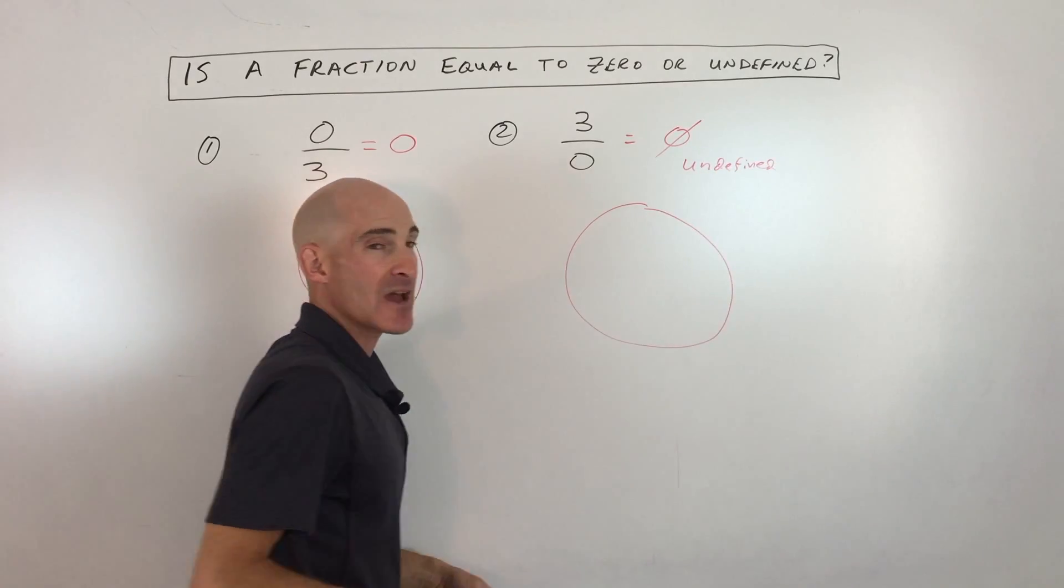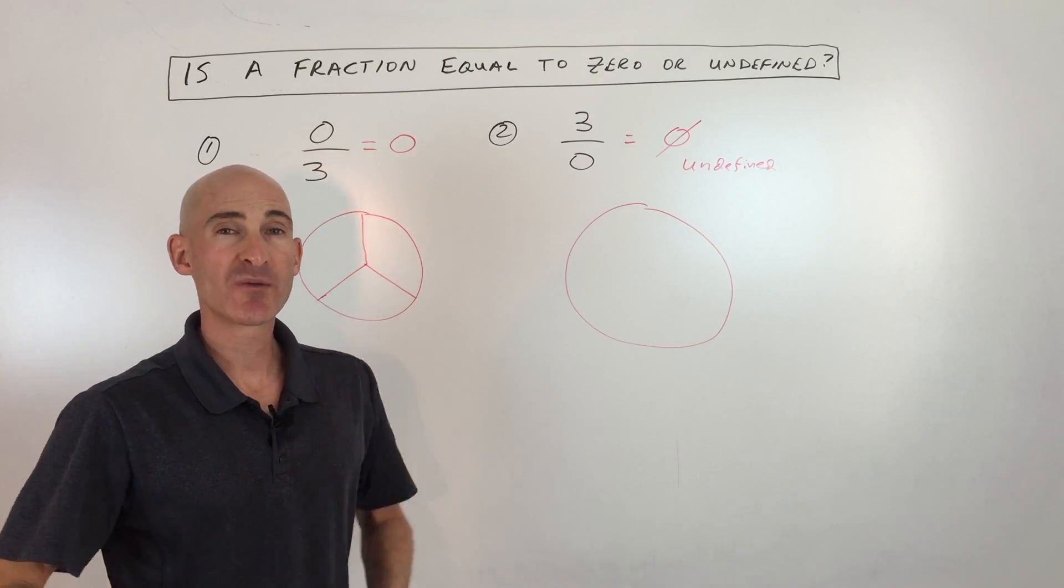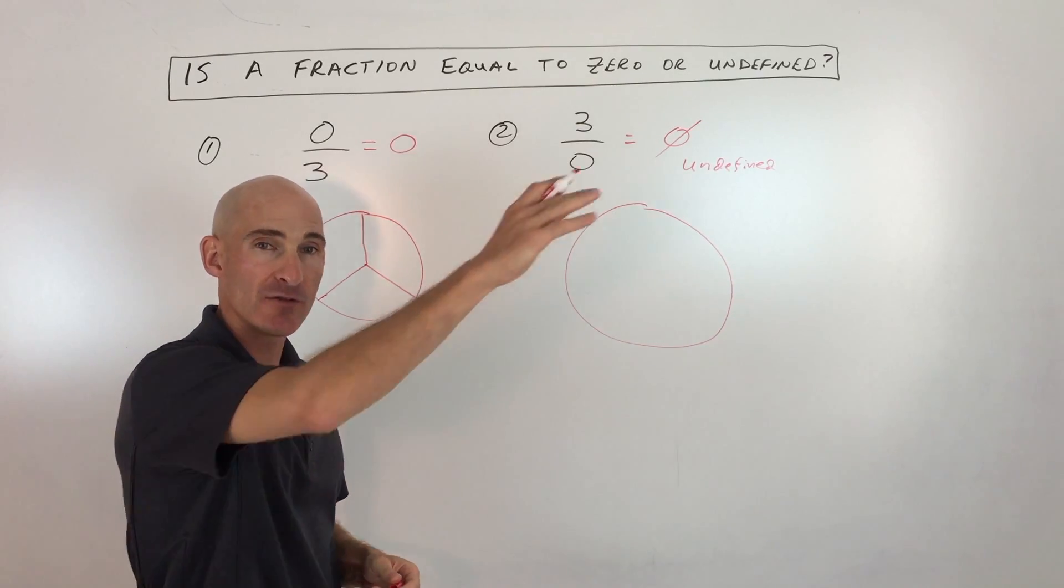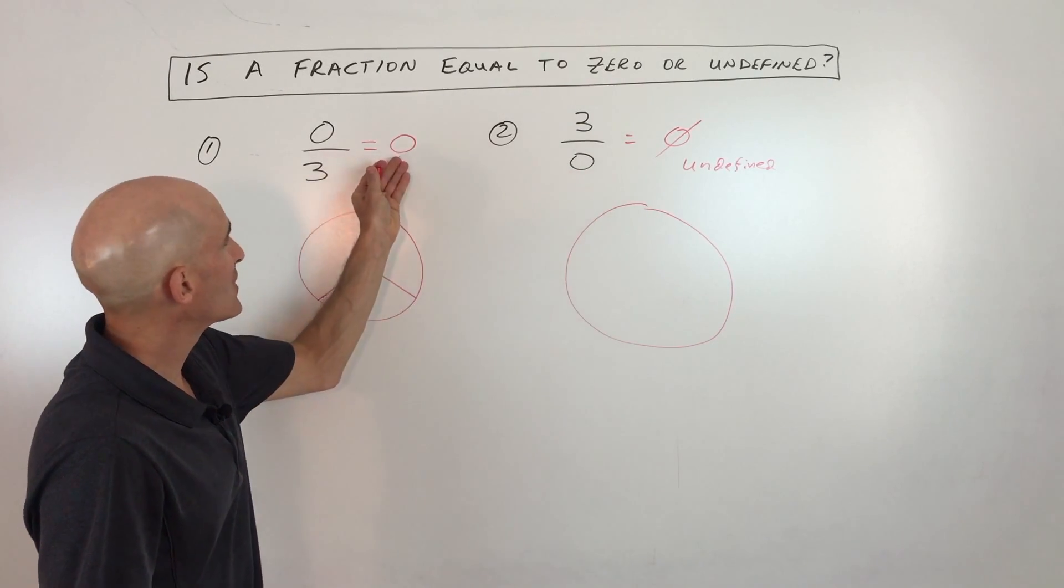Now oftentimes this comes up when students are studying slopes and you're learning about in your class how to find like the angle of a line. And basically when you get a slope of zero,